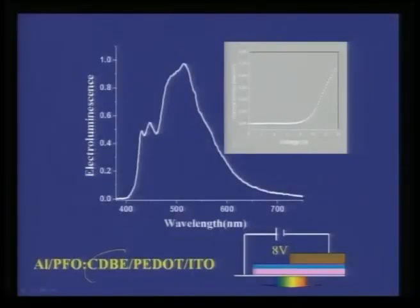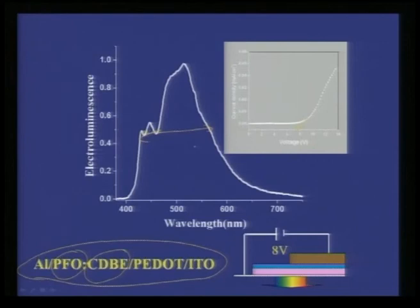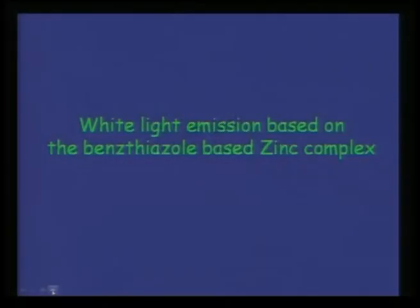Using cis-DBE with a polyfluorene (PFO) matrix in a device configuration — aluminum/cis-DBE/PEDOT:PSS/ITO — at 8 volts you can see a nice device performance showing white light. This is a proof of concept that white light can be produced with simple molecules like cis-DBE when combined with a PFO matrix, demonstrating that small molecules can be used for engineering white light.